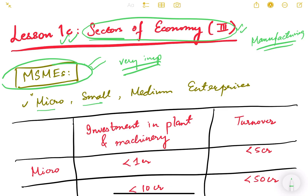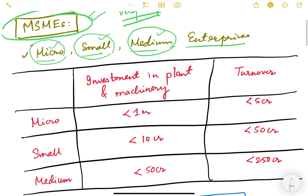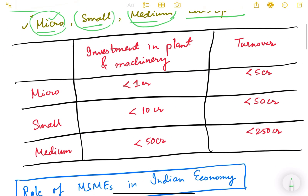MSME is an acronym for Micro, Small and Medium Enterprises. These are companies which are either at the micro scale, small scale, or medium scale. An MSME is defined depending on the investment made in plant and machinery, or in terms of turnover. There are two definitions based on which a company is classified.